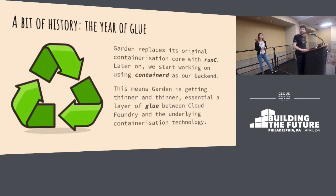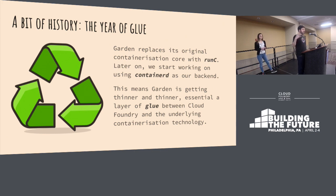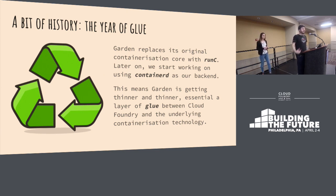So that's what we did. We decided we're going to get rid of all our containerization code and just replace it with calls to RunC. This marks the beginning of what we call the Year of Glue, where basically Garden has stopped being a complete containerization solution and instead is an abstraction on top of an existing containerization tool — in this case, RunC.